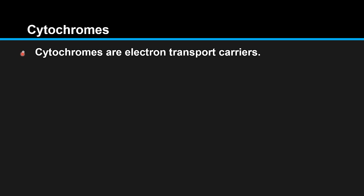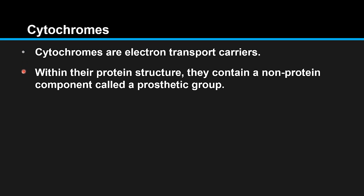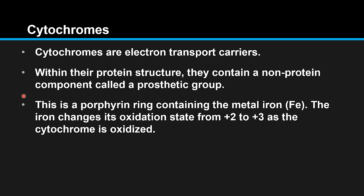Cytochromes are electron transport carriers. Within their protein structure they contain a non-protein component called a prosthetic group. This is a porphyrin ring containing the metal ion. The ion changes its oxidation state from plus 2 to plus 3 as the cytochrome is oxidized.